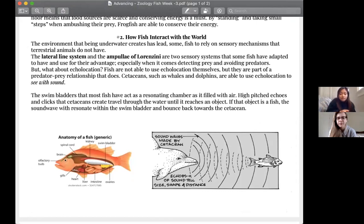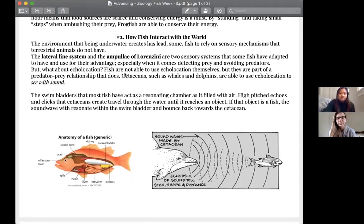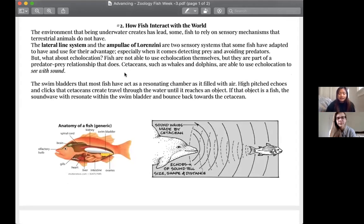But what about the two other sensory systems that fish have? Being underwater has led some fish to rely on sensory mechanisms and sensory systems that terrestrial animals do not have. The lateral line system and the ampullae of Lorenzini are two systems that fish have adapted to have and use for their advantage, which we did get to explore a bit in our last call.